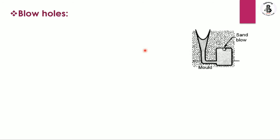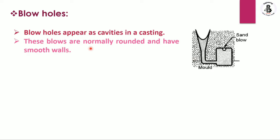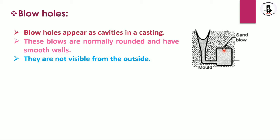Starting with the first defect: blow holes. In the casting process, molten metal is filled into the cavity through the sprue or pouring basin. After solidification, sand blows are generated. Blow holes appear as cavities inside the casting. These blows are normally rounded and have smooth walls, and they are not visible from the outside — they exist inside the material or mold cavity.